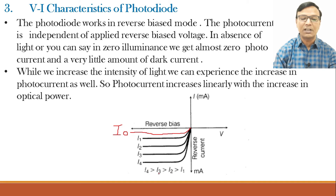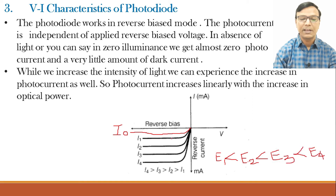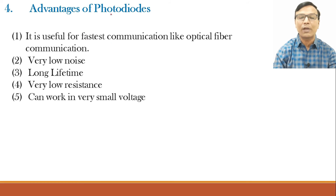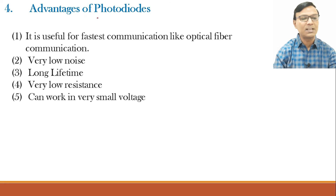This current is flowing in the reverse bias condition. Now the advantages of photodiode: it is very useful for the fastest communication systems like optical fiber communication, where light is used as the carrier. Photodiode is used on the receiving side to detect the light signal. It has very low noise, a very long lifetime, very low resistance, and can work at very small applied voltages.